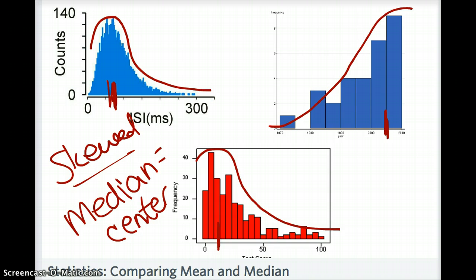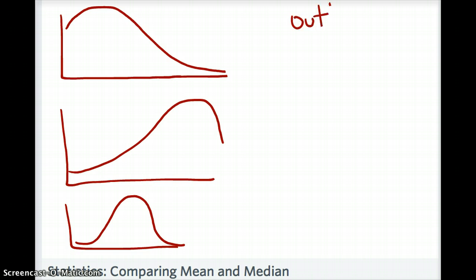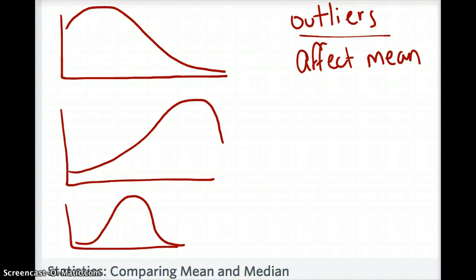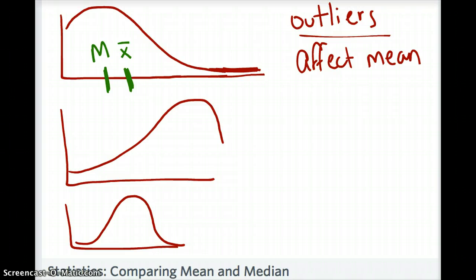When you have a skewed distribution, use the median for your center. Another important thing to go over is outliers — outliers can affect your data. Specifically, outliers affect your mean. The more outliers you have, the greater or lesser your mean will be, depending on the skewness. For a right skewed distribution, adding outliers on the right pulls your mean and makes it greater. On a graph, for a right skewed distribution, your median is close to your peak and your mean is pulled toward the tail.